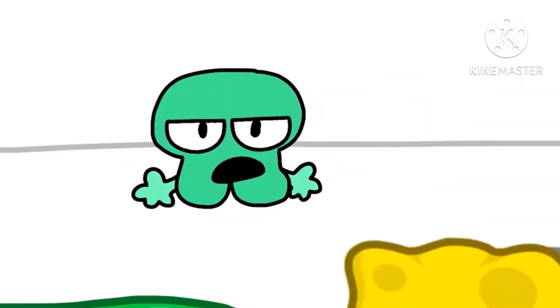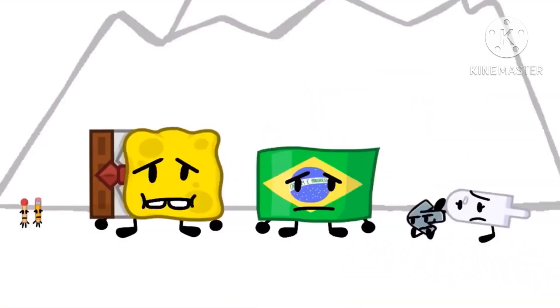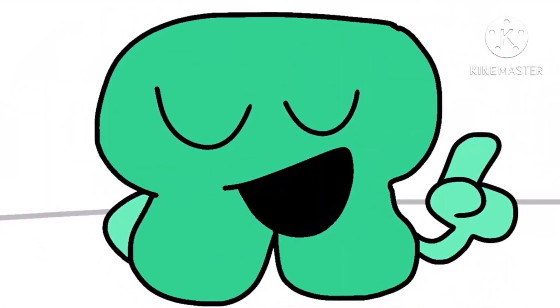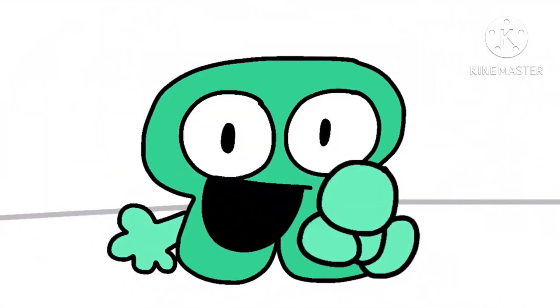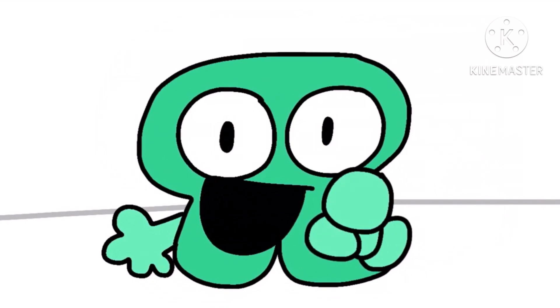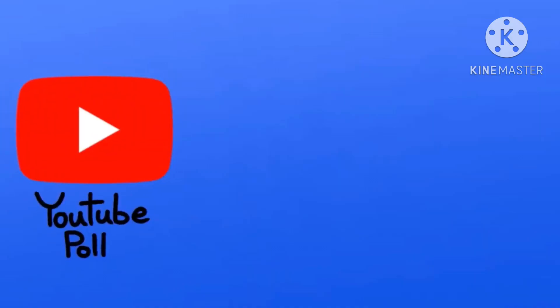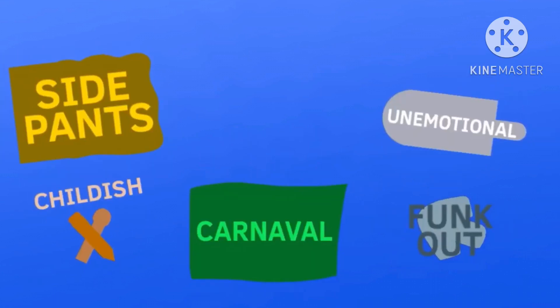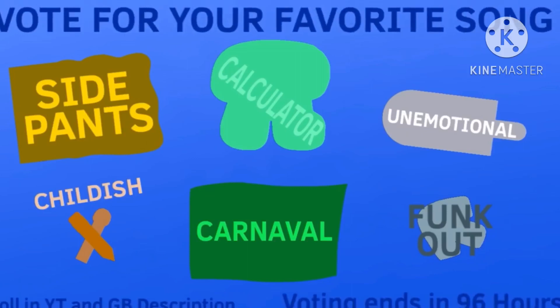Well, since none of you actually did the challenge, everyone's up for elimination. But this time the voting is going to be a little bit different. Viewers, instead of voting for who you want to eliminate, you guys are going to vote on whose song you thought was the best. Just use the poll in the description or on the mod's Game Banana page. I'm also putting my song in there even though my votes won't count. Whoever gets the least votes will be eliminated. Voting ends in 96 hours, and see you in episode 9.